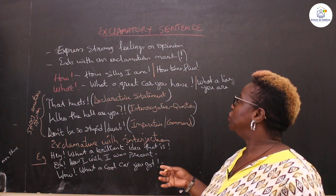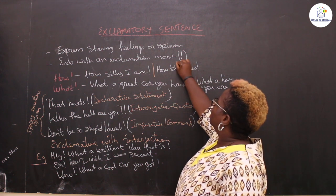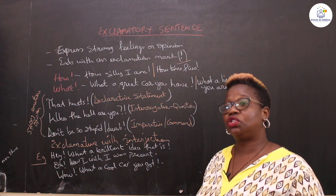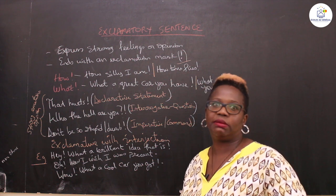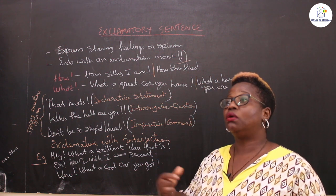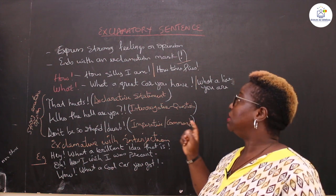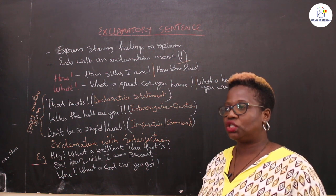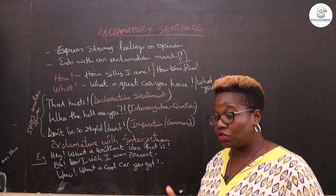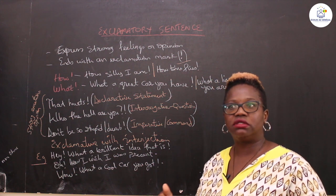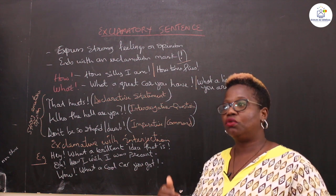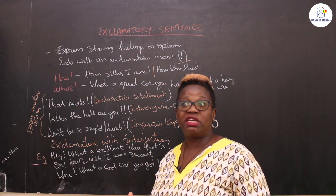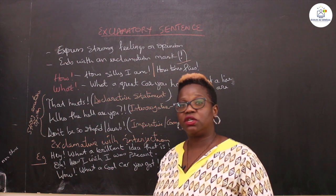An exclamatory sentence always ends with an exclamation mark. Sometimes it can also have a question mark followed by an exclamation mark, depending on how you say it. Exclamation is more spoken than written, but when writing — especially in essays — you need to convey emotion so the reader understands how you're feeling.